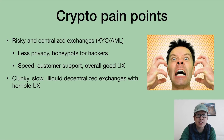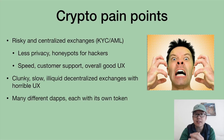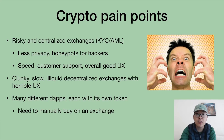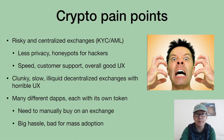On the other hand, decentralized exchanges are clunky, slow, illiquid, and have bad UX. We also have an Ethereum ecosystem with many different dApps, each with its own token. That makes it hard to use because you need to manually buy those tokens on exchanges in order to use those dApps. This causes a big hassle for the end user, and it's bad for mass adoption.